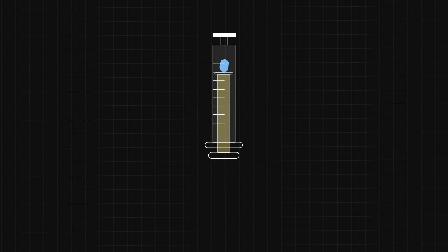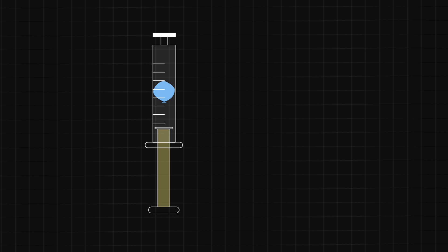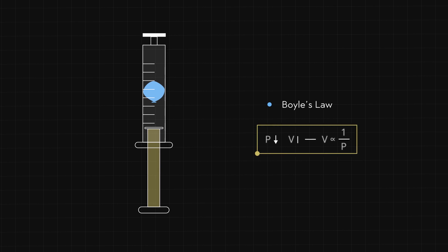Conversely, if we pull the syringe plunger further out, the pressure inside the syringe decreases and the balloon gets bigger. Boyle's law is an inversely proportional relationship: if the pressure is doubled, the volume is halved.